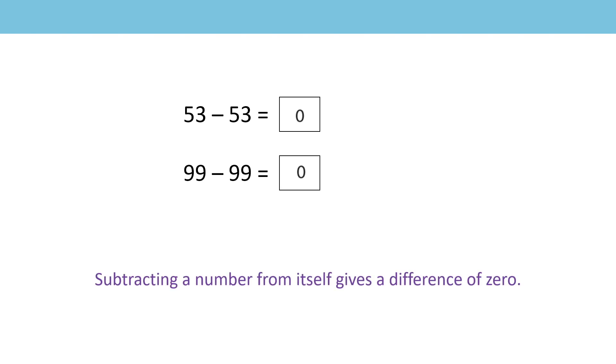Are you ready for a bit of a challenge now? I'm going to show you some much bigger numbers. 53 subtract 53. What would that be? Well done. Zero, because I'm subtracting the same amount from what I had to start with. Here's a really large amount. 99 subtract 99. That will equal zero. We're getting very good at noticing the patterns now. When we subtract a number from itself, we have a difference of zero.